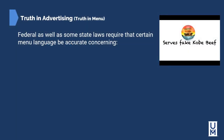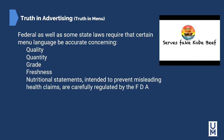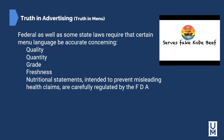This is also known as truth in menu. There are several federal and state laws that require certain menu language to be accurate concerning the quality, quantity, and grade of items served — such as the grade of beef. Freshness and any nutritional statements intended to prevent misleading health claims are carefully regulated by the FDA. Consumer safety advisories may be required on menus depending on local regulations, such as warnings about underdone beef or the use of eggs.